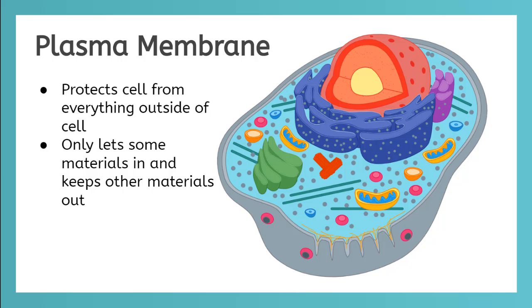We will start from the outside and work our way in. The gray sac holding the cell is the plasma or cell membrane. Each type of cell has a membrane that acts like the skin of the cell. It keeps the inside of the cell safe from the outside and only allows some materials to enter the cell.